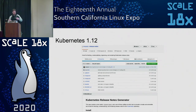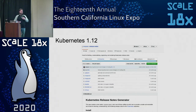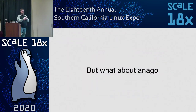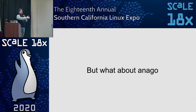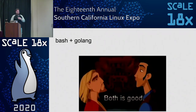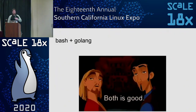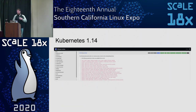Mike happened to be one of the release notes shadows at the time and took it upon himself to write a release notes tool. Interestingly, his tool wound up staying in his own personal repo for the next three releases: 1.12, 1.13, 1.14. So we had Anago doing all the Kubernetes builds and release notes, plus a Golang tool — and we just kept Bash and Golang together. Why not?